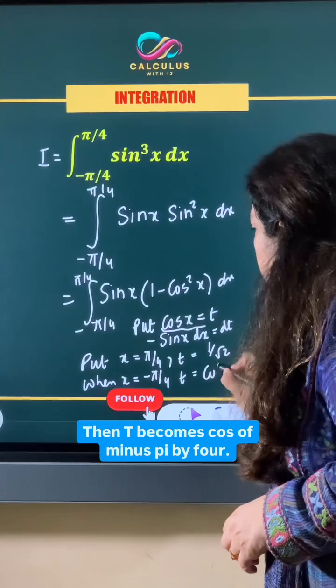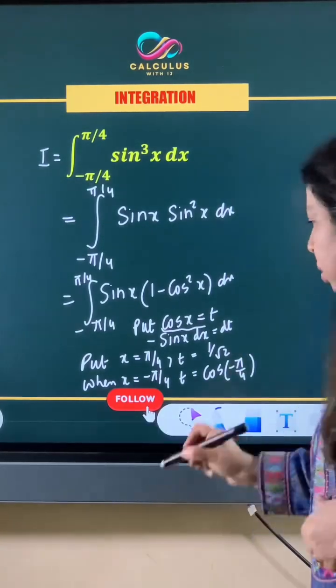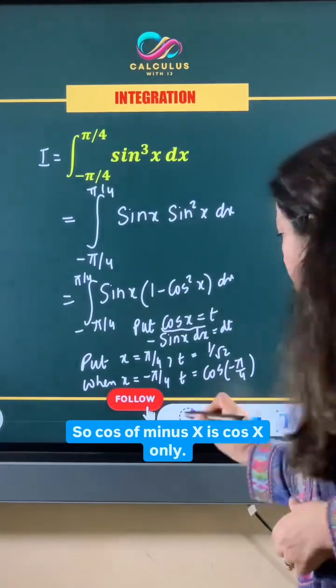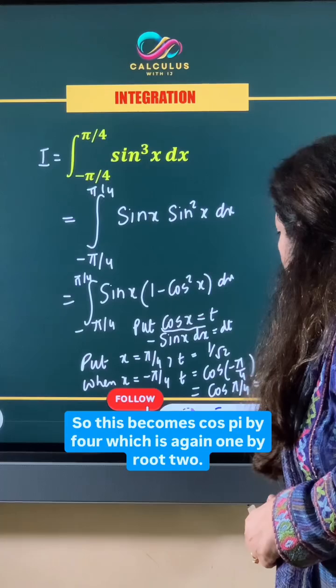t becomes cos of minus pi by 4. Now cos is an even function, so cos of minus x is cos x only. So this becomes cos pi by 4 which is again 1 by root 2.